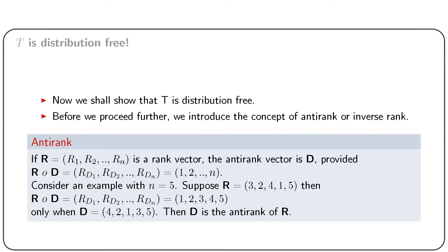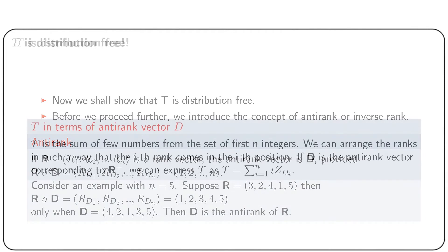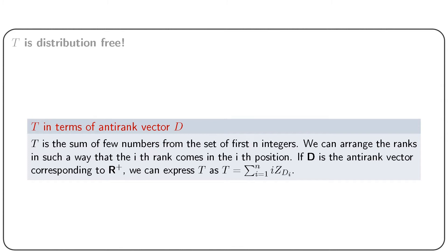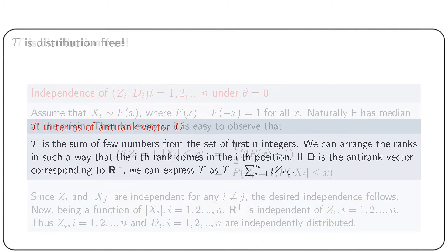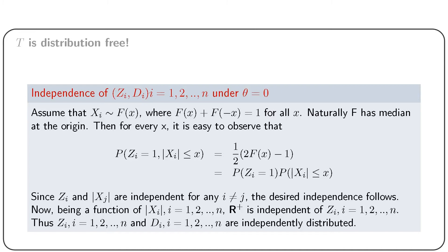Now we shall express T in terms of the anti-rank vector d. Observe that T is the sum of few numbers from the set of first n integers and 0. We can arrange the ranks such that the ith rank comes in the ith position. If d is the anti-rank vector corresponding to r+ vector, then in such an arrangement zi becomes z_{di}. Thus we get T = summation i from 1 to n of i multiplied by z_{di}. We shall show that the vector z1, z2, ..., zn and the vector d1, d2, ..., dn are independently distributed under theta = 0.